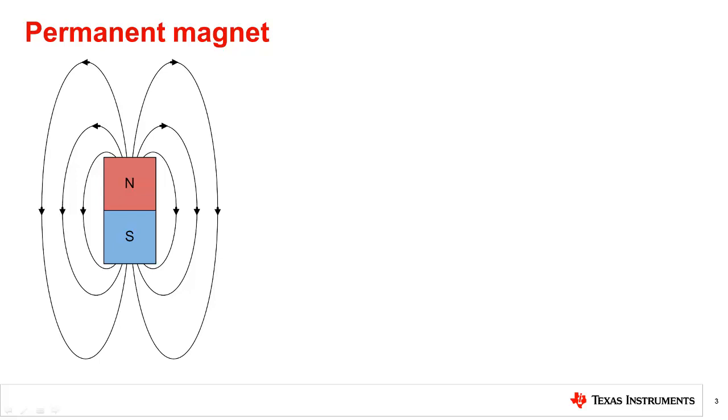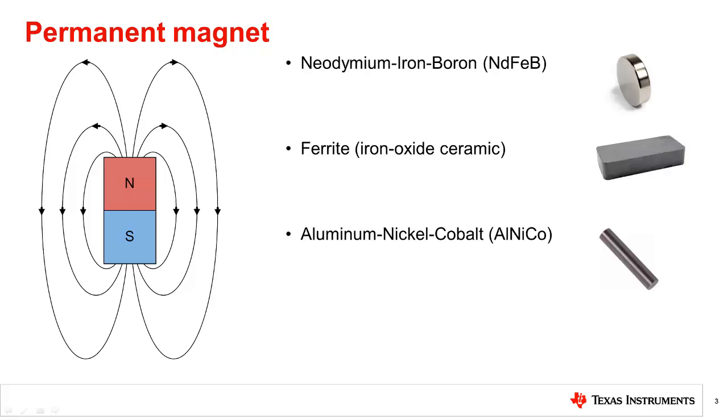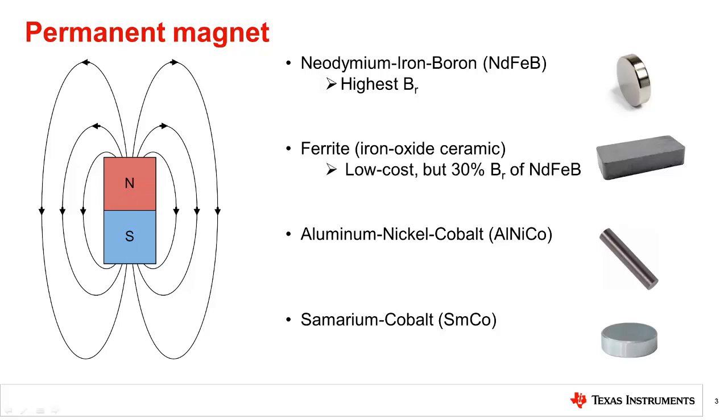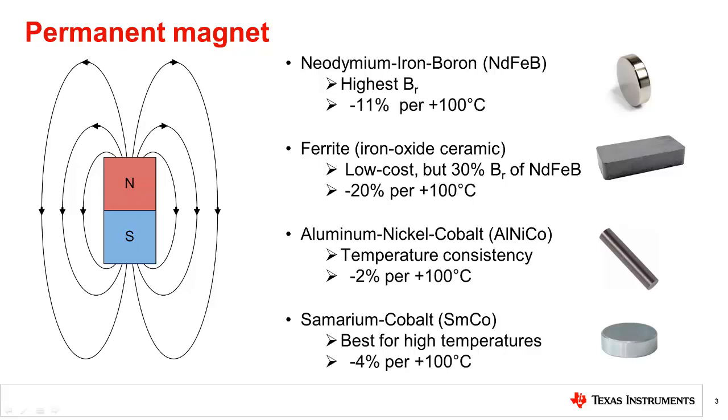The most common permanent magnet materials on the market are neodymium iron boron, ferrite, aluminum nickel cobalt, and samarium cobalt. Neodymium is known for having the highest flux density and resiliency to being demagnetized. Ferrites are known for being low cost but have weak magnetic properties. Aluminum nickel cobalt has widespread use and has excellent temperature consistency. Samarium cobalt is most similar to neodymium but it has better temperature consistency and supports far higher temperatures. As temperature increases, all of these materials produce a reduced flux density. The appropriate shifts per material are shown.